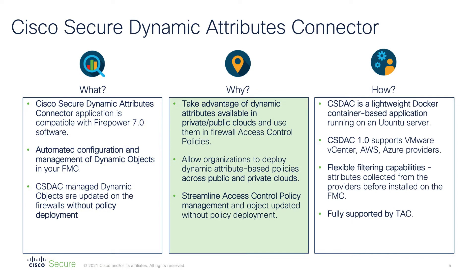The Dynamic Attributes Connector subscribes to public and private cloud controllers to download attributes like VM names, assigned IP addresses, or virtual network assignments. For example, you can configure a Dynamic Object matching all application servers in a particular distributed port group. The object is then used in your Access Control policy to allow user traffic only to the active servers. As soon as you scale up the application and spin up more servers, CS DAC detects the new VM IP address. The new Dynamic Object content is pushed to the FMC, which in turn shares this information with all managed firewalls. As a result, the Access Control policy automatically adjusts on the firewalls in your network and you don't even have to log into the FMC.